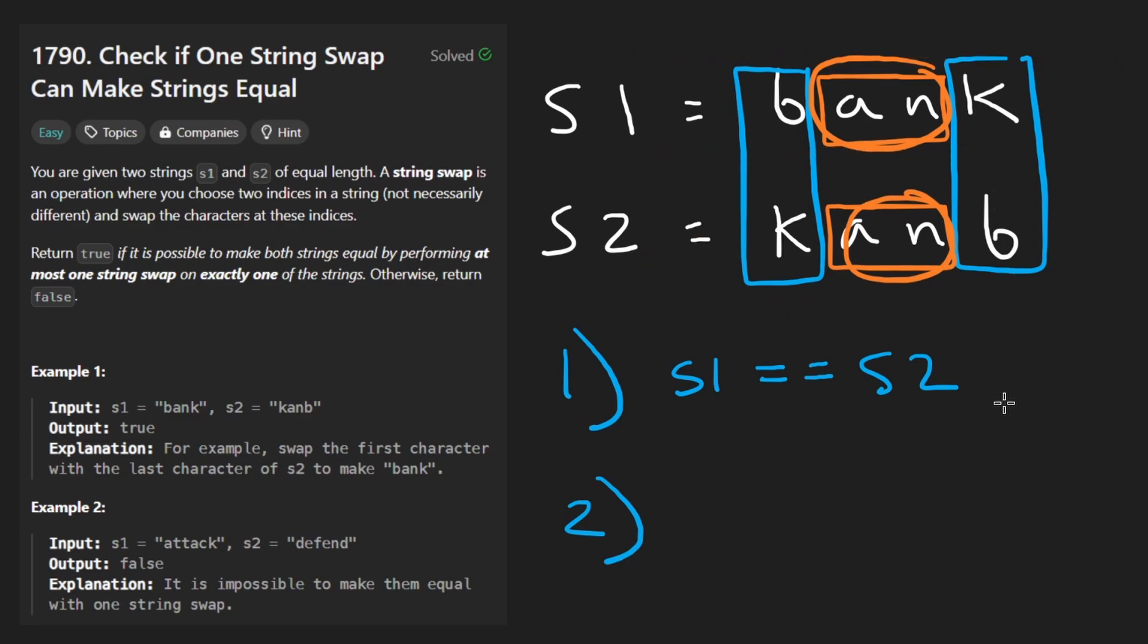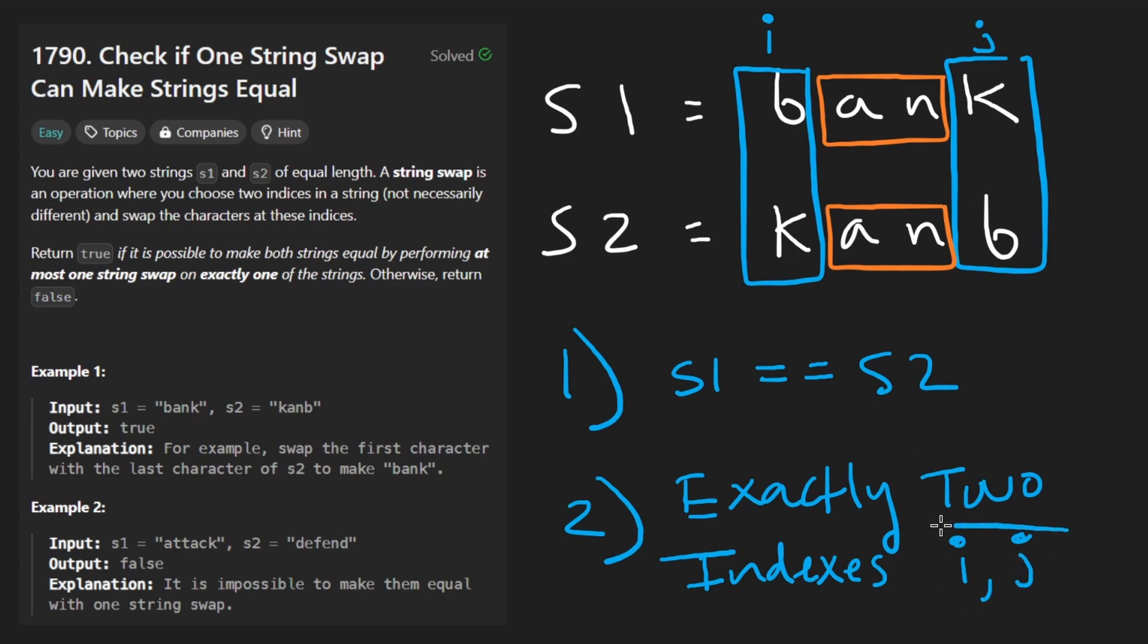But anyways what this tells me is that if there is a swap that we have to perform, there will be exactly two indices or indexes. Let's call them i and j and in this case this is our i and this is our j. So there will be exactly two positions where the characters are different.